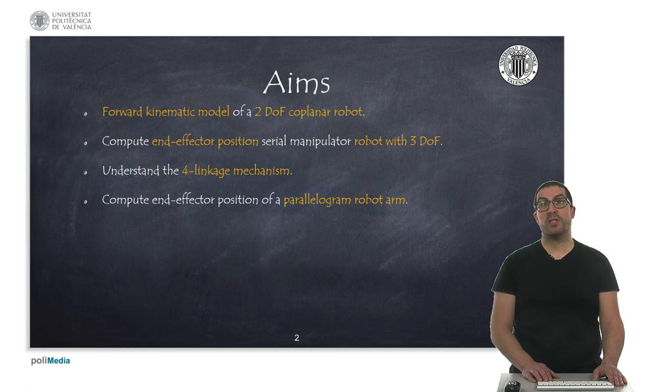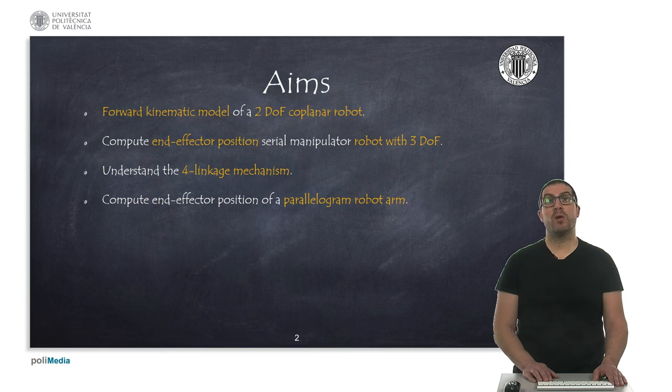It is a very simple study in which we will see the forward kinematic model of a coplanar robot with two degrees of freedom. Then we will compute the end effector position of a serial manipulator robot with three degrees of freedom and we will also study the forward linkage mechanism.